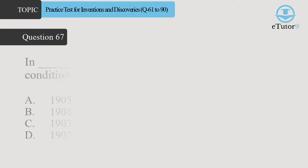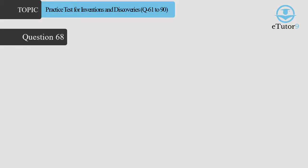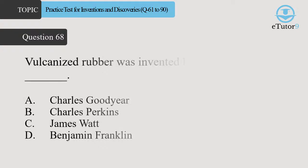Question 67. In Dash, the world's first modern air conditioner was invented? Answer is D. 1902. Question 68. Vulcanized rubber was invented by Dash? Answer is A. Charles Goodyear.